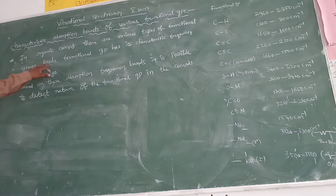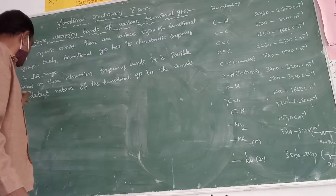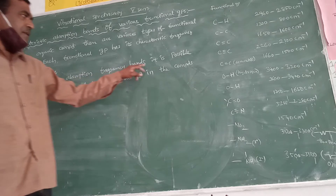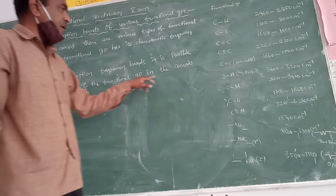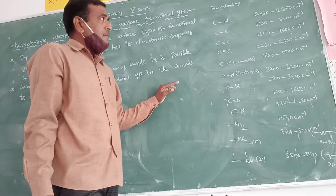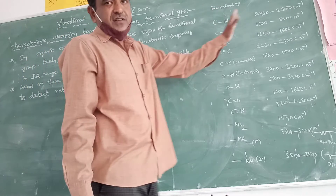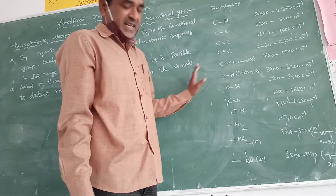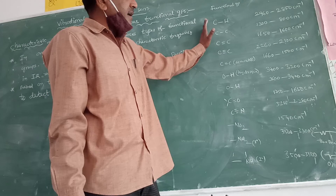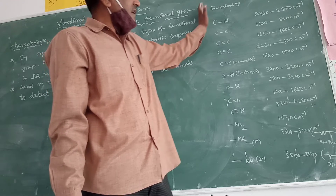In organic compounds, each functional group has its characteristic frequency in the IR region. Based on these absorption frequency bands, it is possible to detect the nature of the functional group in the compounds. These frequency regions are constant values, as given in the textbook.